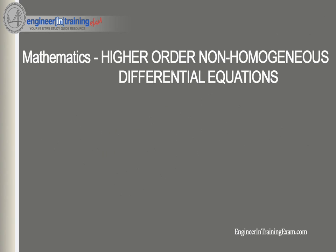Let's go through an example. We want to solve y'' - 4y' - 12y = 3e^(5t). We look at g(t) and see it is in one of the usable forms, so we'll use the method of undetermined coefficients. The goal is to find the particular solution.